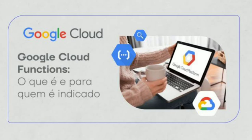AWS, Microsoft and Google push on with hybrid cloud strategies. As enterprises' appetite for hybrid cloud grows, the rivalry between AWS, Microsoft and Google will increasingly revolve around on-premises environments.